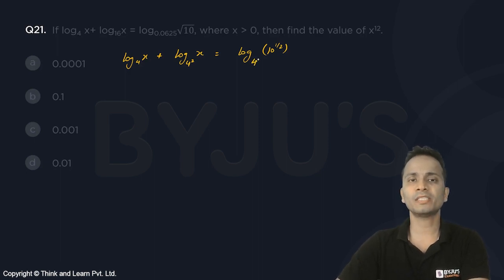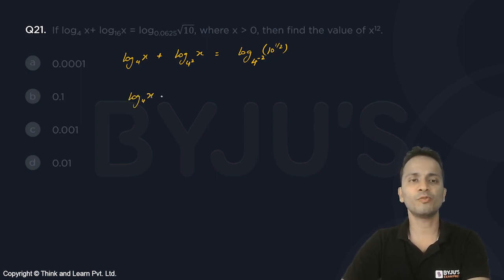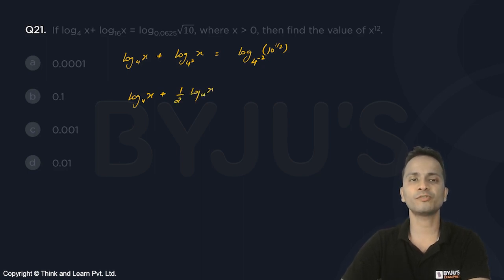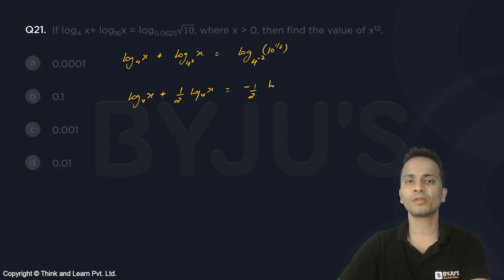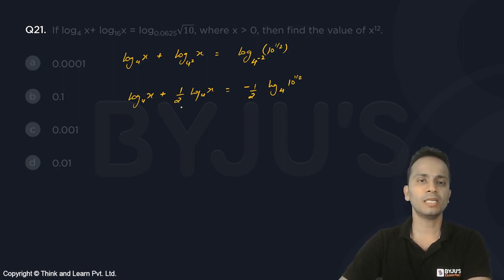This becomes: log of x to the base 4, plus 1/2 times log of x to the base 4, is equal to minus 1/2 times log of 10 raised to the power 1/2 to the base 4.